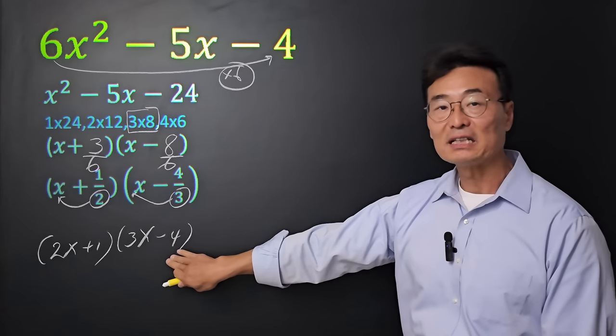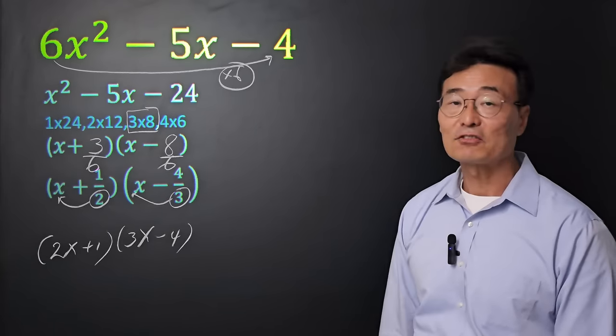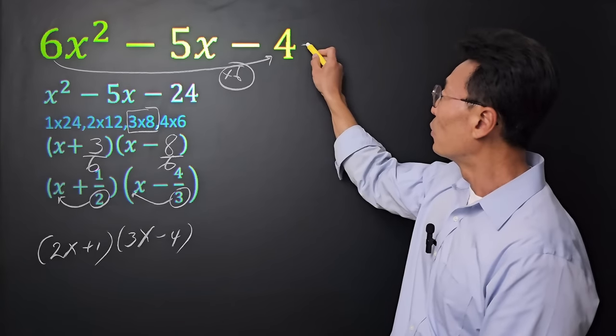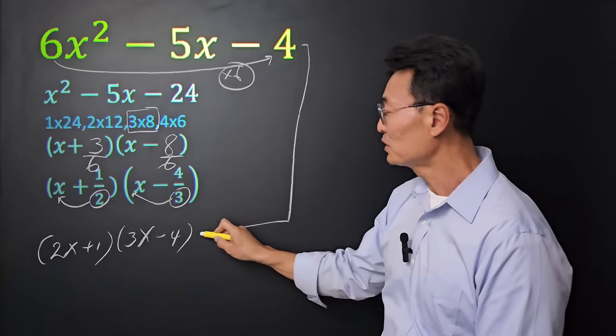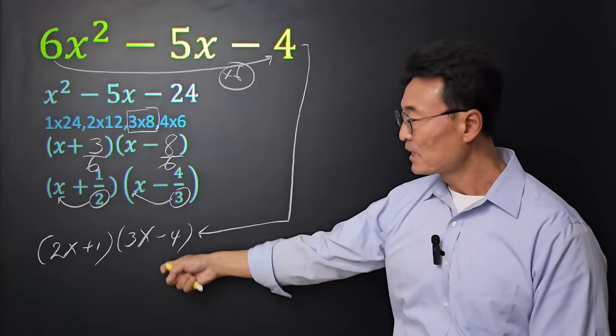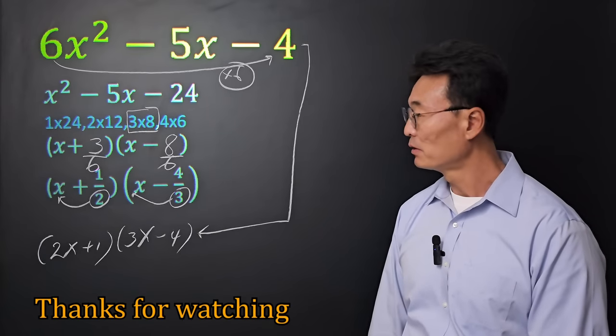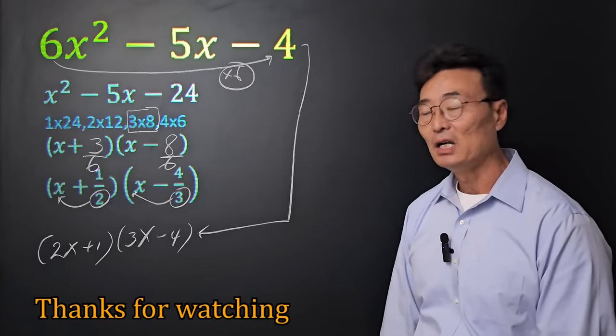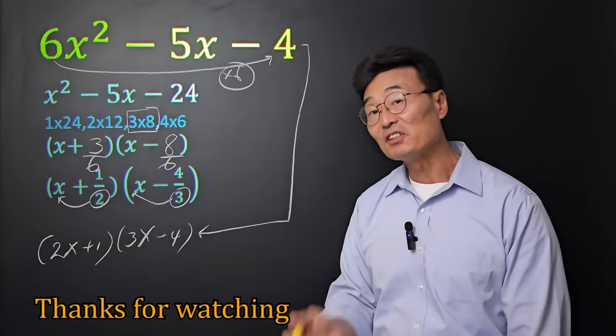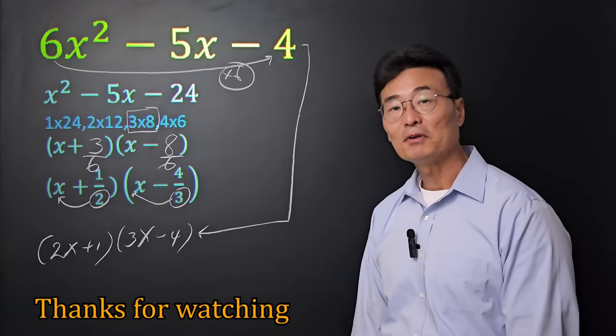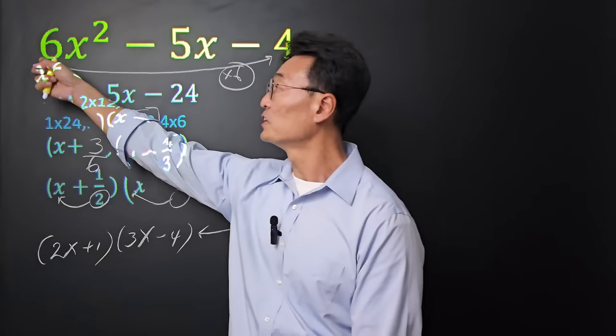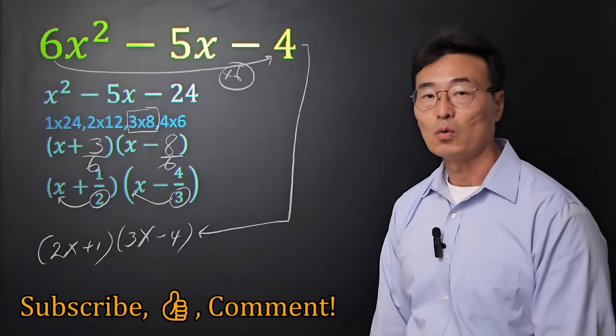Again, if you multiply this out, you'll get 6x squared minus 5x minus 4. Or if you factor the original expression, we get 2x plus 1, 3x minus 4. So I hope this method, if you haven't seen it before, will help you factor trinomials with a leading coefficient other than 1.